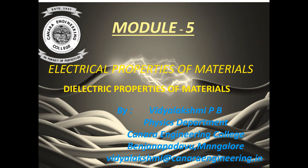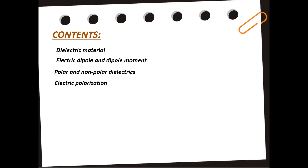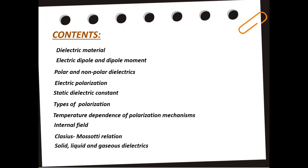In this video, we will discuss dielectric properties of materials from module 5. The contents are: dielectric material, electric dipole and dipole moment, polar and non-polar dielectrics, electric polarization, static dielectric constant, types of polarization, temperature dependence of polarization mechanism, internal field, Clausius-Masotti relation, solid, liquid and gaseous dielectrics, and application of dielectrics in transformers.